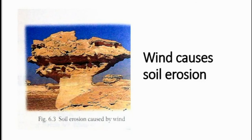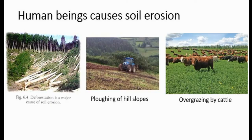Next, wind causes soil erosion. In desert and semi-desert regions where strong winds blow, a lot of topsoil is carried away. This affects farmers because the manure they put in the soil to increase fertility is also blown away with the topsoil. Quite often, the roots of plants lose their soil cover and the plants may die. Soil erosion by wind can even cause unusual rock formations.